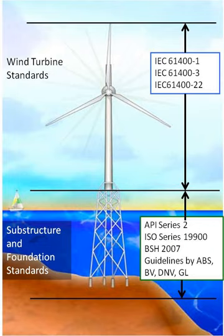Also required is API RP 2A-WSD, recommended practice for planning, designing and constructing fixed offshore steel platforms — working stress design. In Canada, the previous national standards were outdated and impeded the wind industry, and they were updated and harmonized with 61400 by the Canadian Standards Association with several modifications. An update for IEC 61400 is scheduled for 2016.